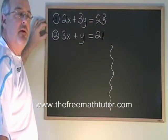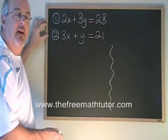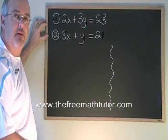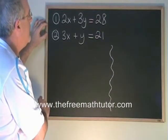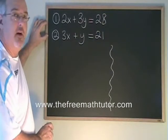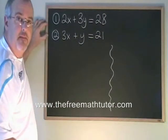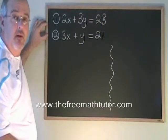But what do we do if we don't have a variable in the equations that has equal and opposite numerical coefficients? Here's an example: 2x plus 3y equals 28, 3x plus y equals 21. 2 and 3 are not equal and opposite, and 3 and 1 are also not equal and opposite.